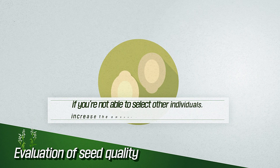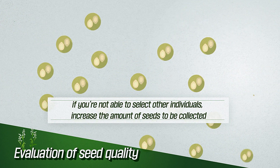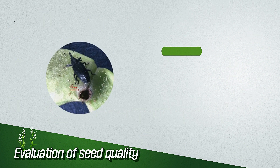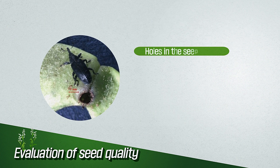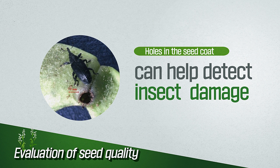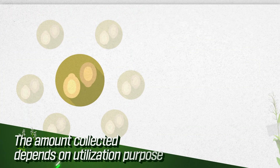If you're not able to select other samples, increase the amount of seeds to be collected. The presence or absence of holes in the seed coat can help determine if the seed has insect damage. The amount collected depends on utilization purpose.